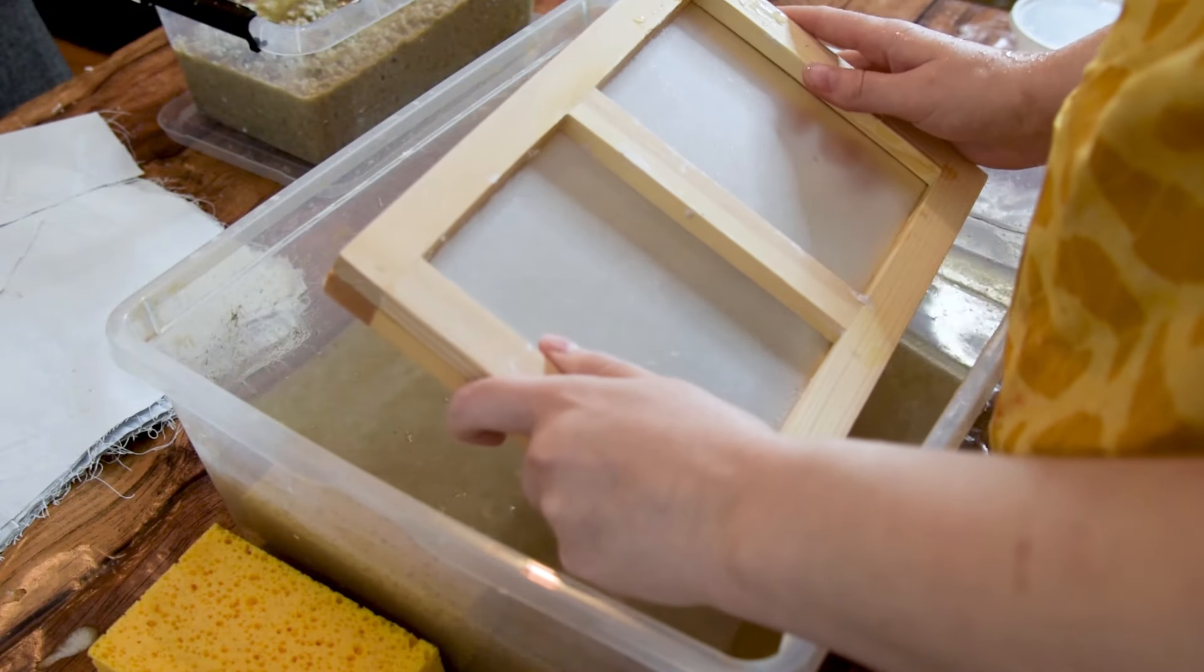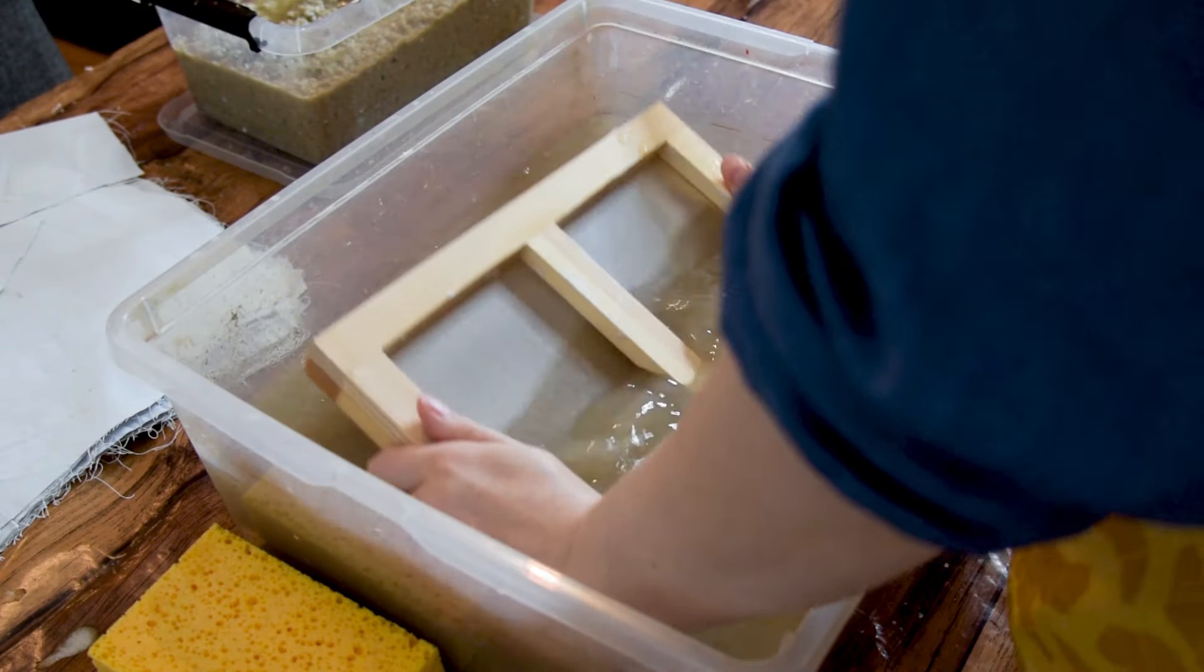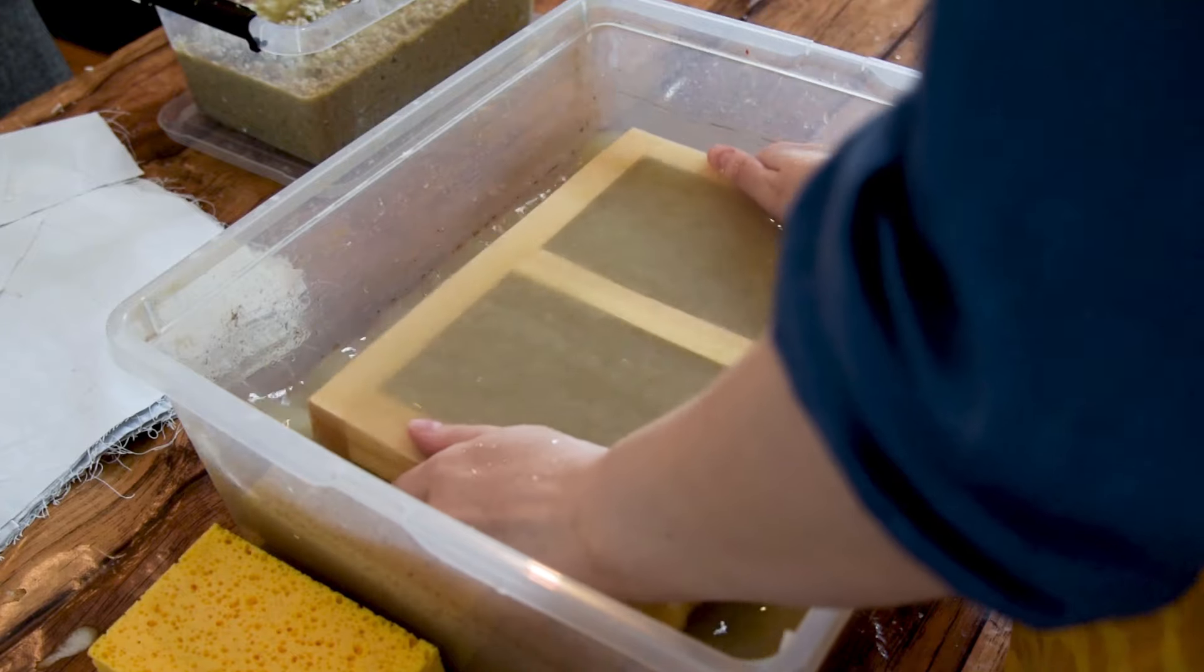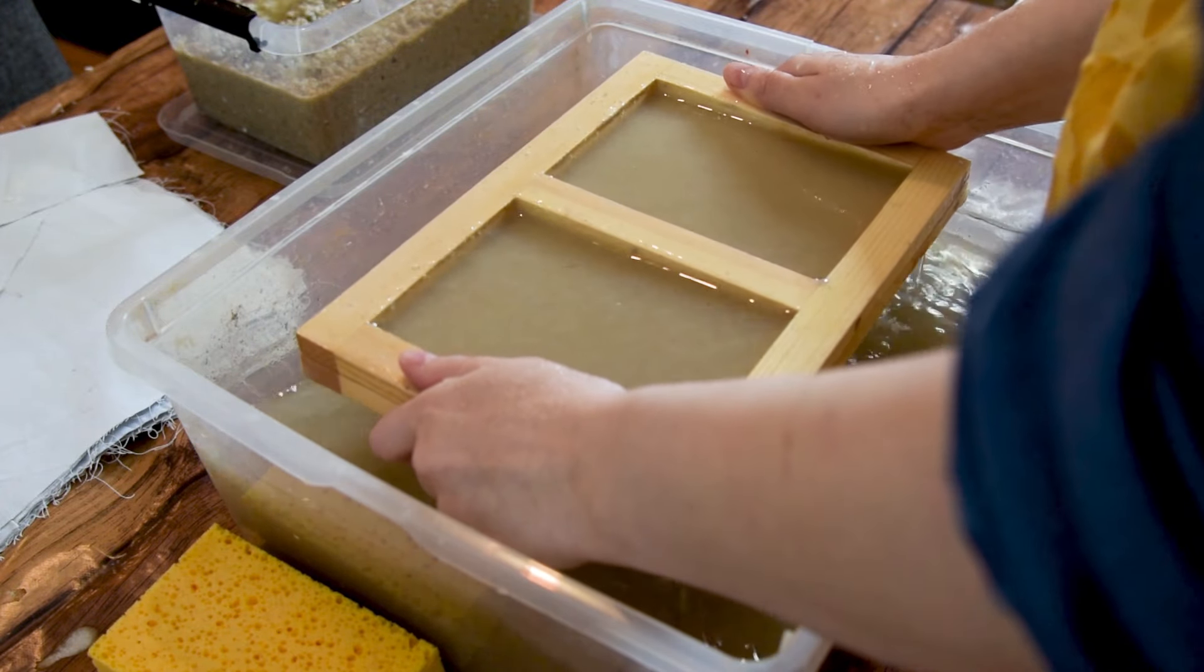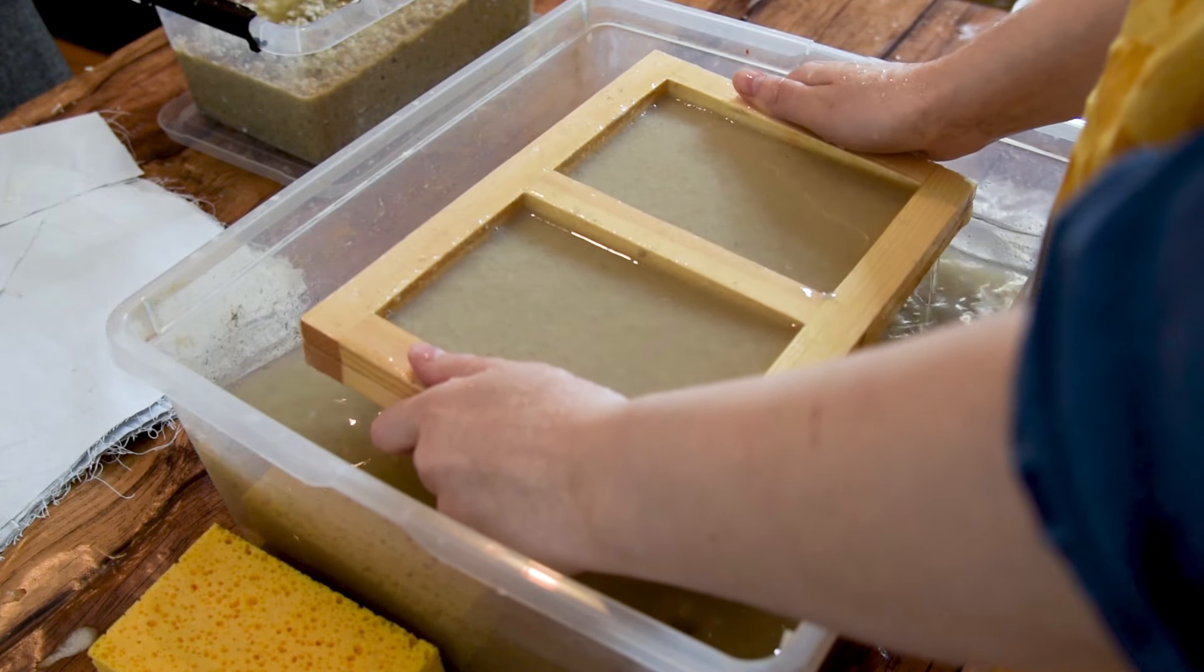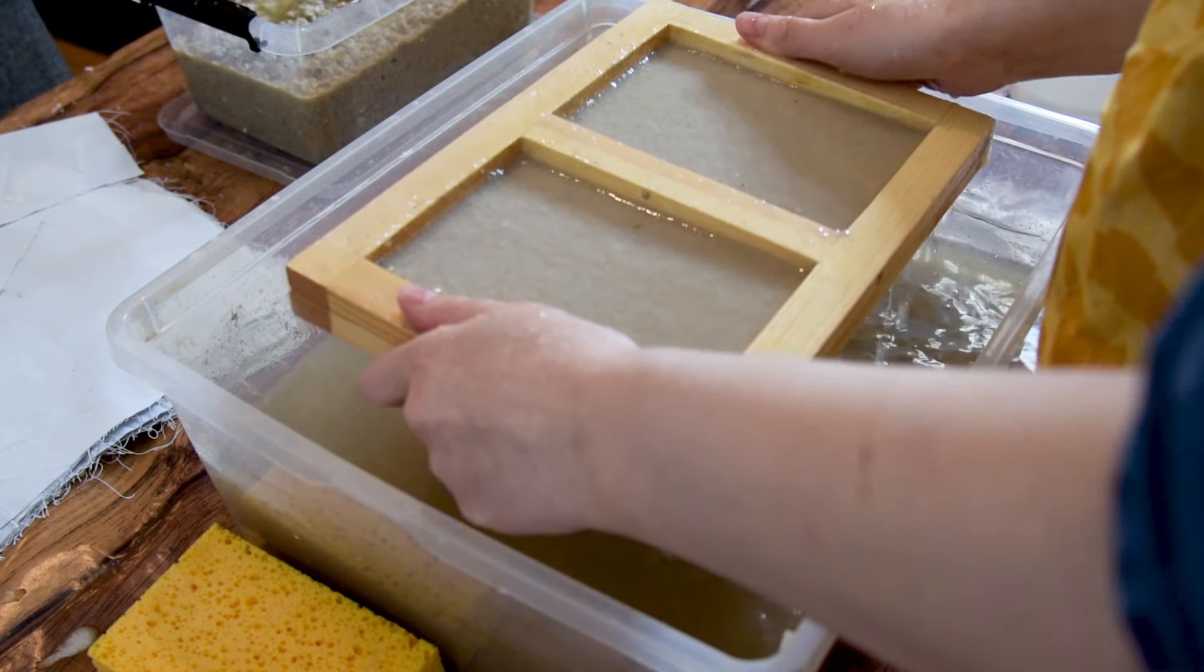I then get my mold and deckle ready and dip in the container to scoop up a good amount of pulp. This one specifically seemed great for this project because it makes two smaller sized pieces of paper in the time it normally takes to make one, and these two seem the perfect size for plantable cards.